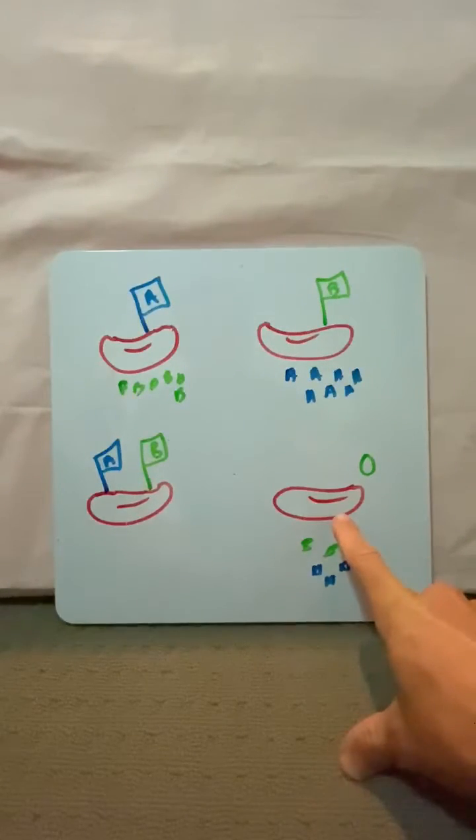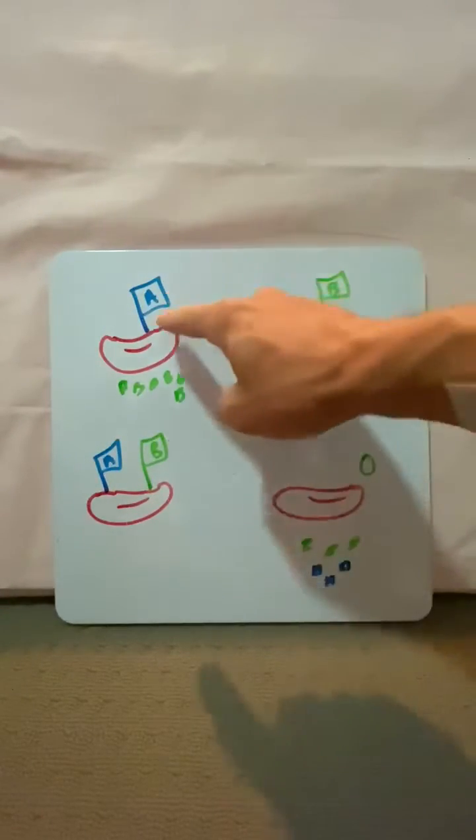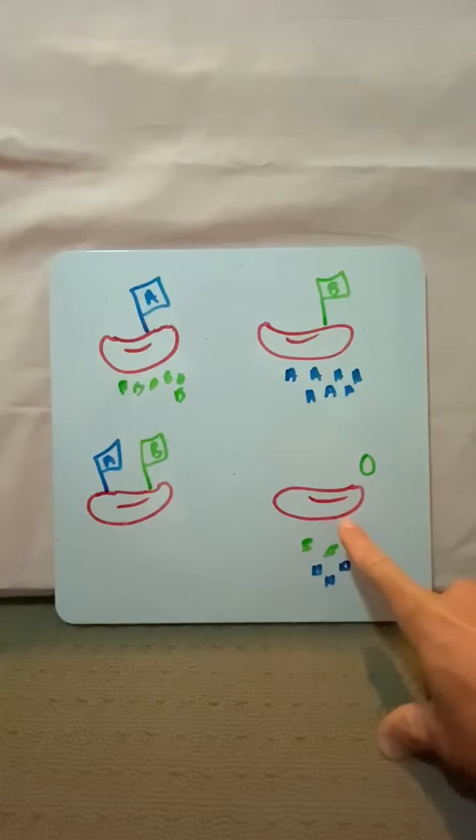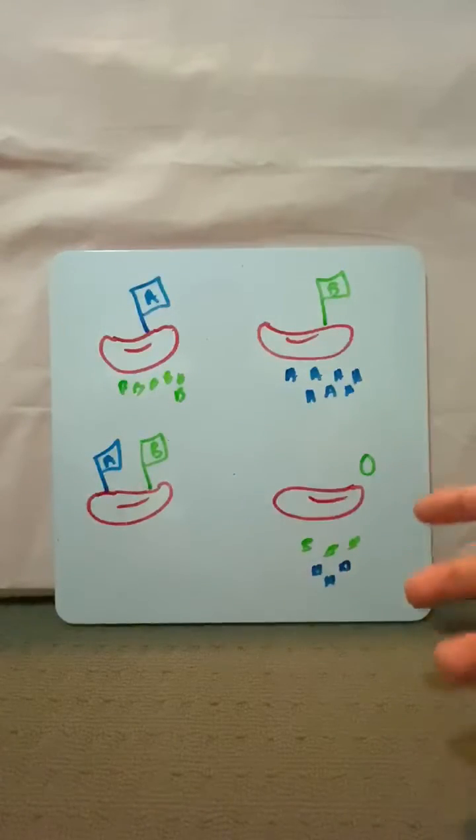Now, because there's no flags here, these guys here can't recognize O blood. So A, B and AB can receive O blood. So it's known as the universal donor, but O blood can't receive anybody else's blood—and this is blood types. When we look at rhesus factors, that's just another flag.